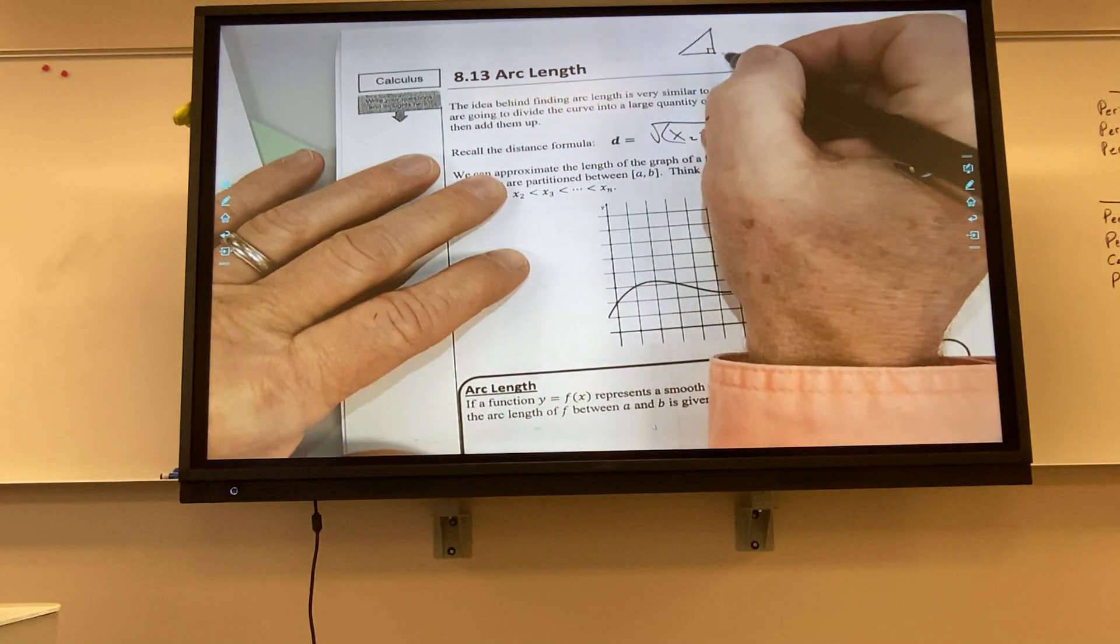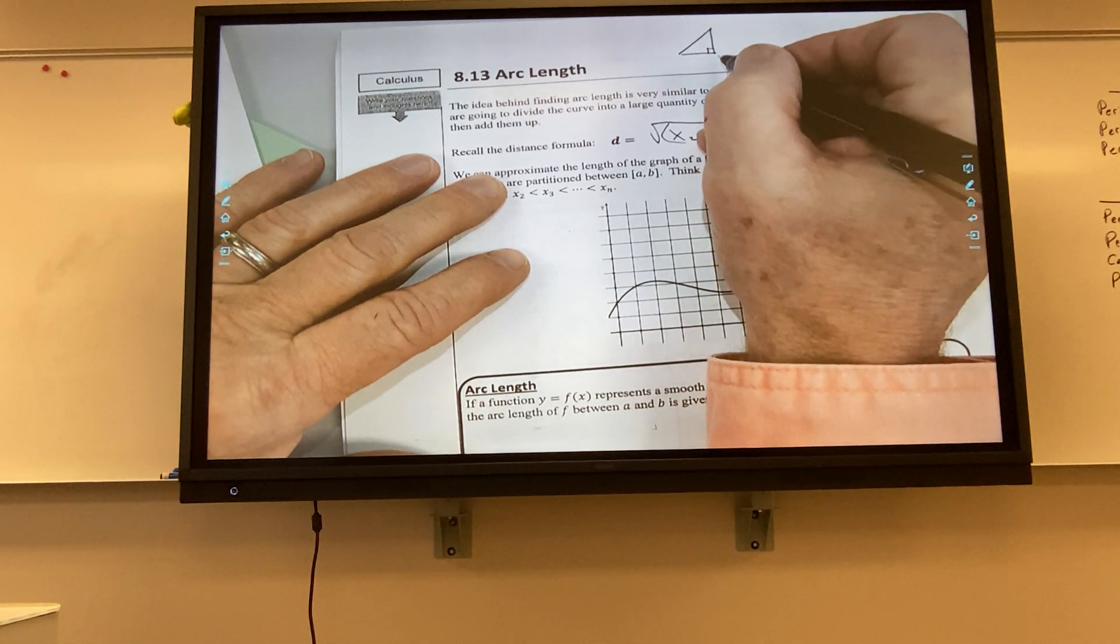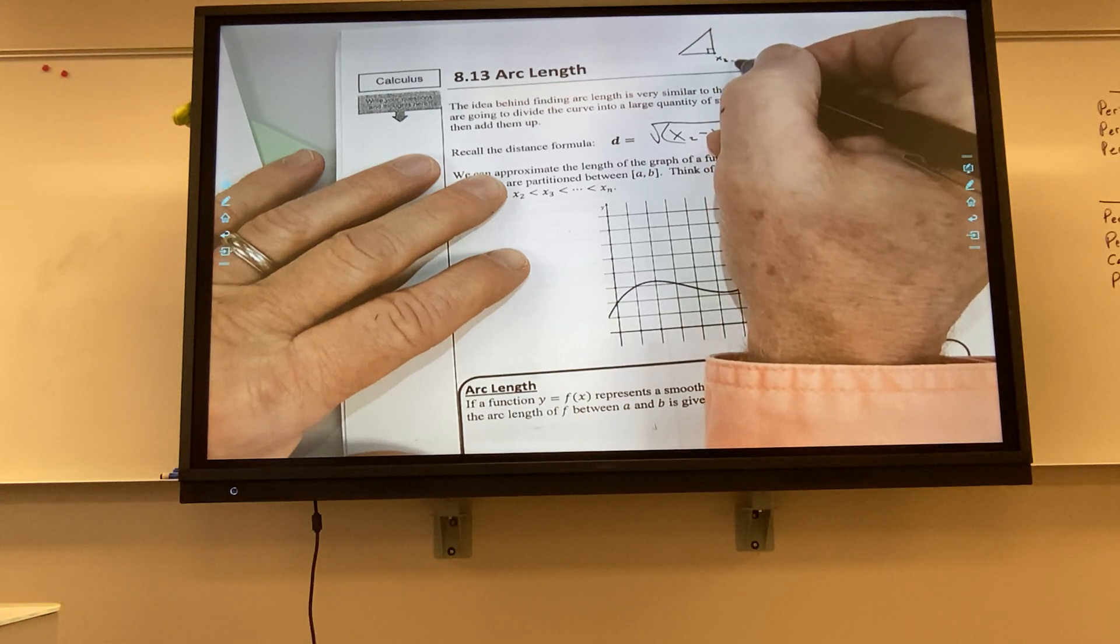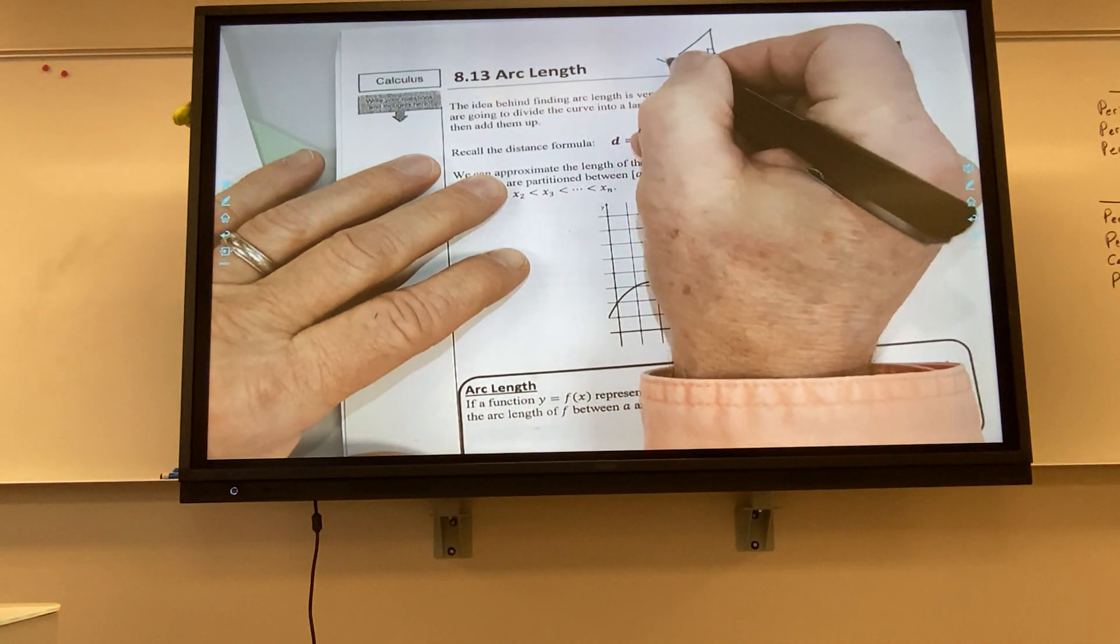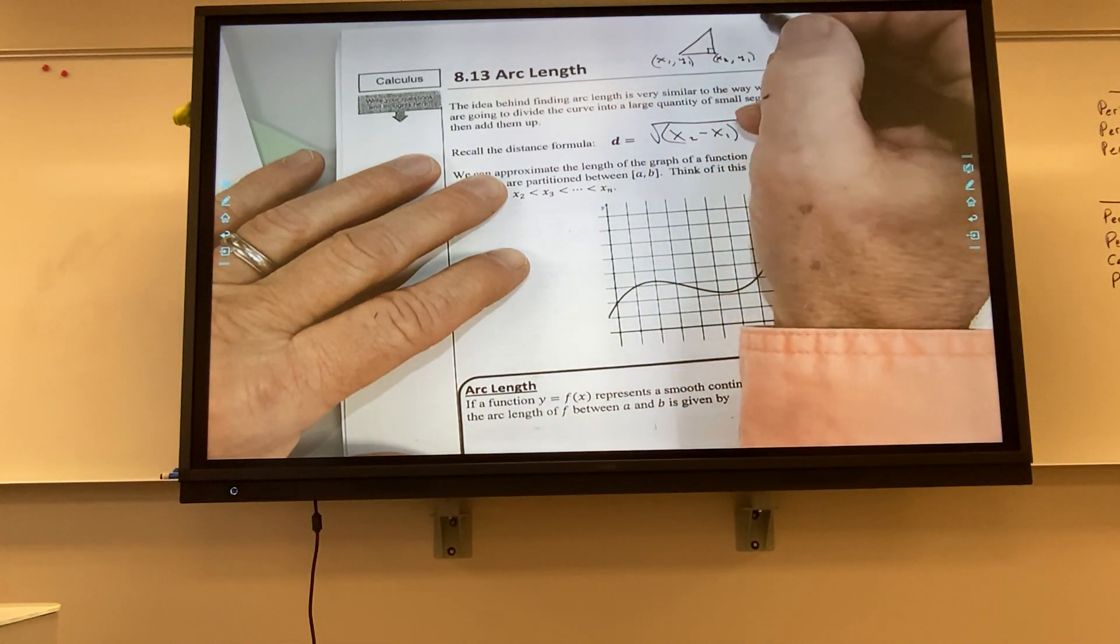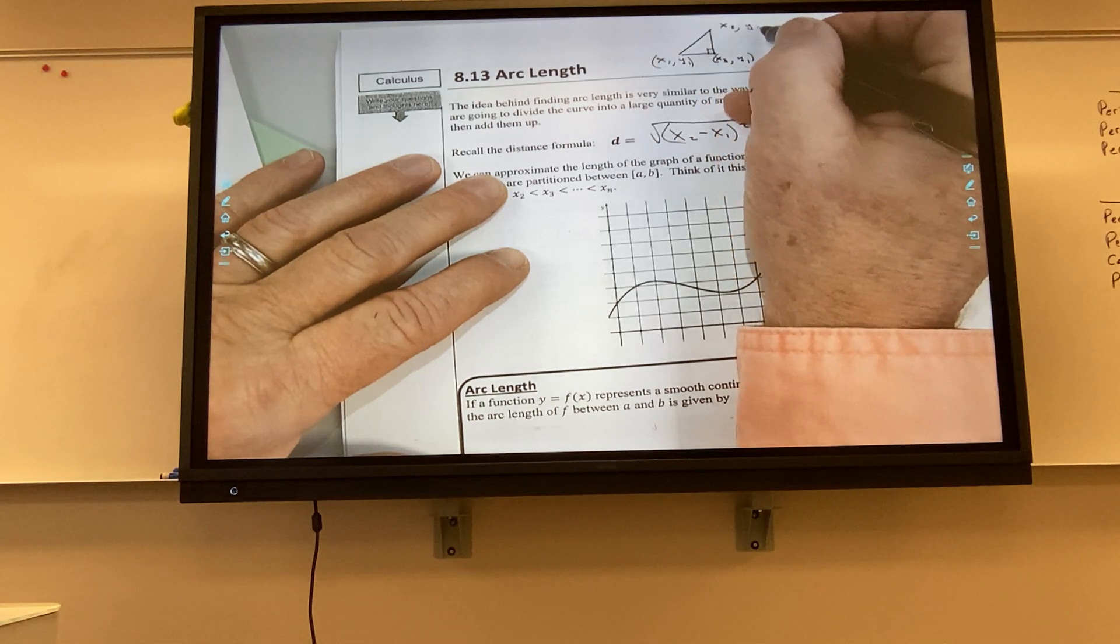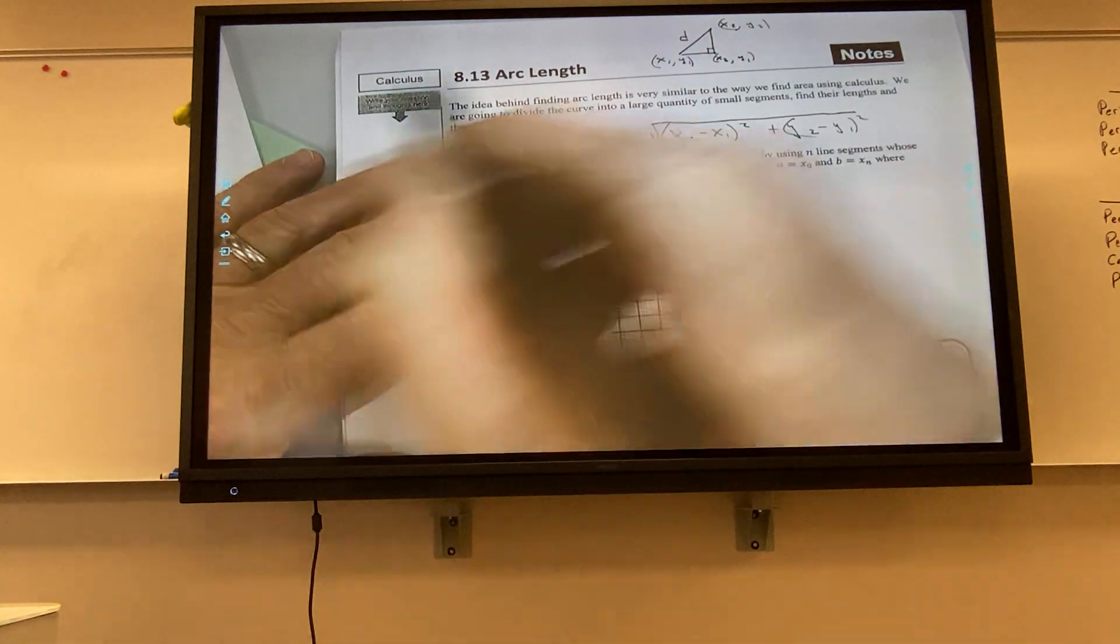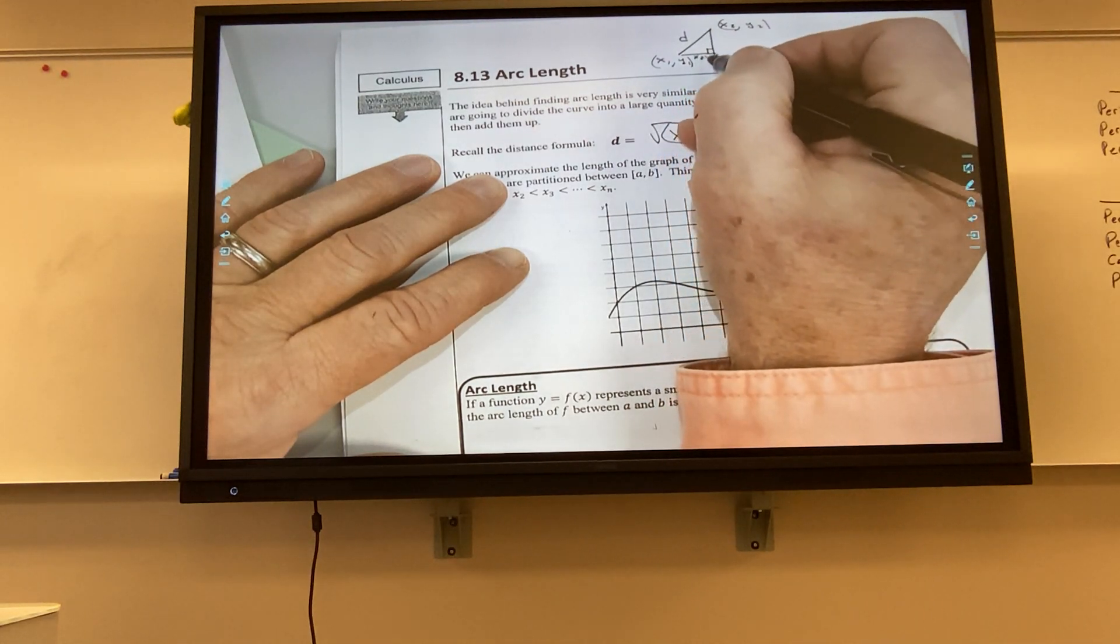So remember how I said right minus left gives you distance? We had that talk on Friday. Do you remember that? Yeah. So if this point right here is x1, y1, and this is x2, y1, and this was x2, y2. And so here's my distance, right? That's why I'm trying to figure out the distance between this point and this point. Well, this distance right here would be x2 minus x1.